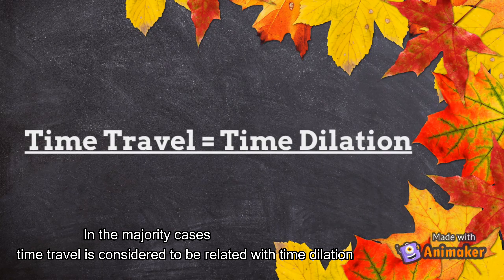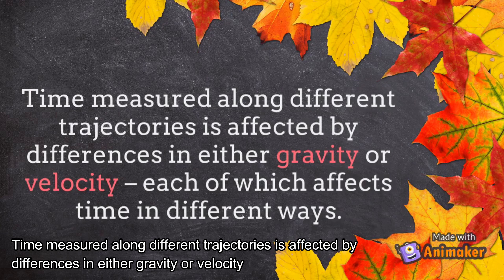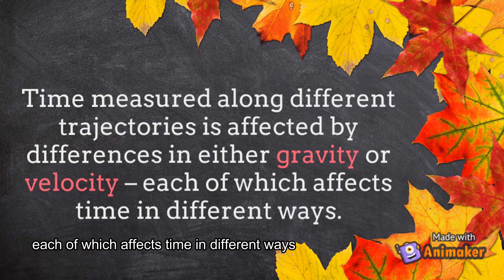In the majority of cases, time travel is considered to be related with time dilation. According to Einstein, time measured along different trajectories is affected by differences in either gravity or velocity, each of which affects time in different ways.